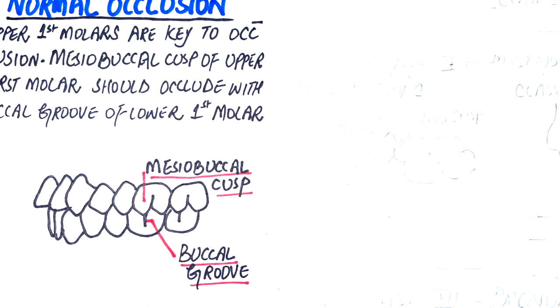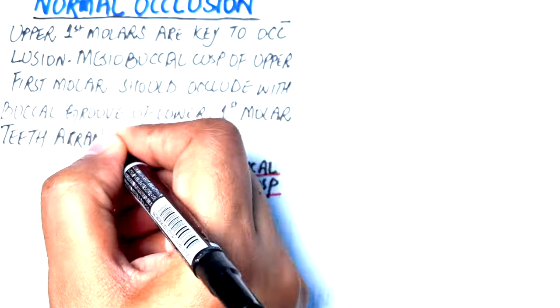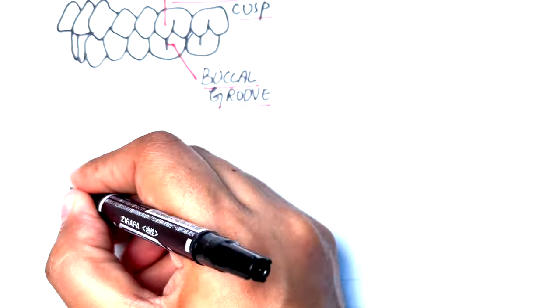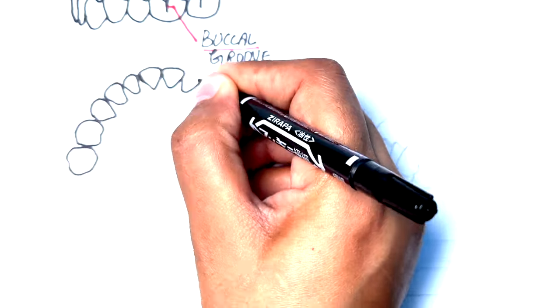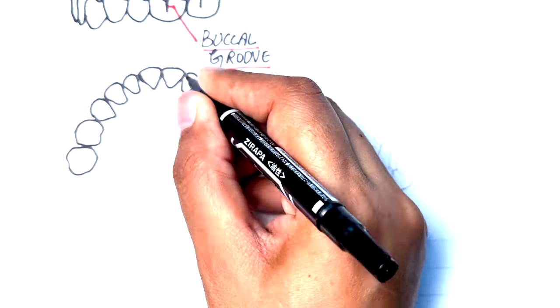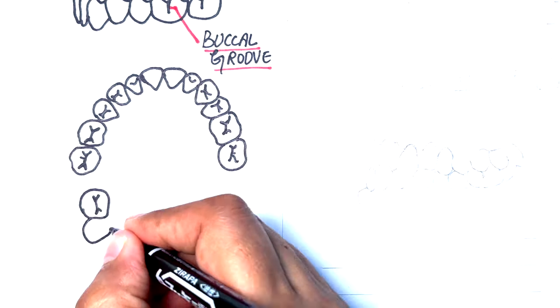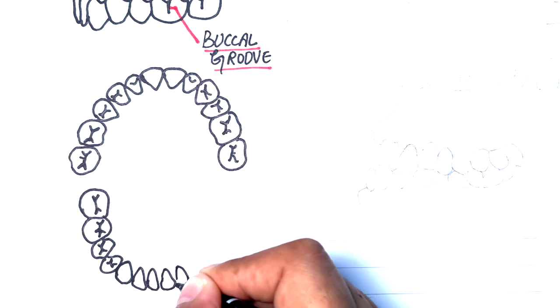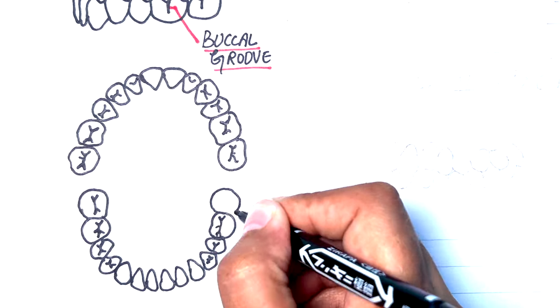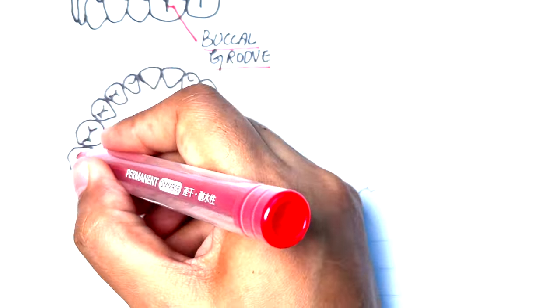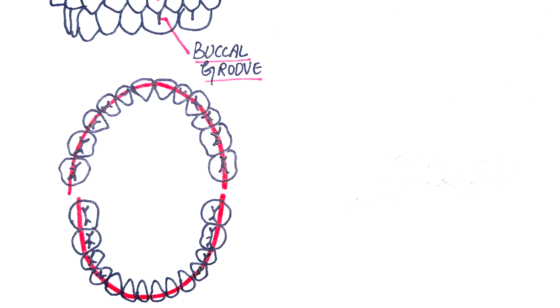If the teeth are arranged on a smoothly curving line of occlusion and this molar relationship exists, then normal occlusion would result. By smooth curving line of occlusion, it simply means having all teeth well aligned and in proper position so that the line of occlusion that runs from the occlusal surfaces of posterior teeth and the incisal edges of anterior teeth is a smoothly curved line.